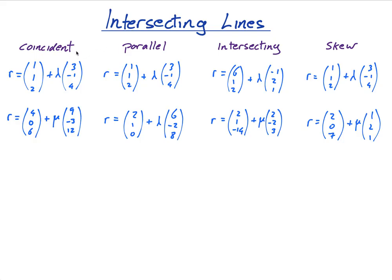Coincident means they are the same. So this line and this line — they are actually the same line because they both have a position vector of a point on the line: (1,1,2) and (4,0,6) are on the line, and their direction vectors are parallel. This times three gives you this, so the direction vectors don't have to be the same but they are going in the same direction.